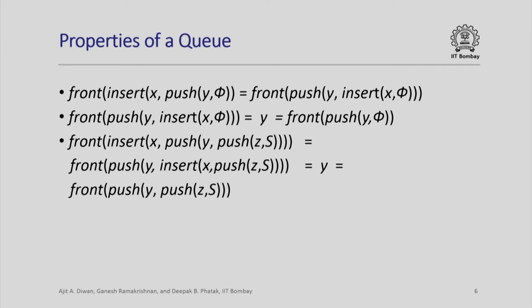Now consider a queue with two or more elements, written as push(y, push(z, s)) where s is any sequence with zero or more elements. If we insert x into such a queue, by definition the resulting queue is obtained by pushing y in the queue obtained by inserting x in push(z, s). The front of this is always y by definition, and this also equals the front of push(y, push(z, s)). So this equality holds for queues of size greater than or equal to 2. In this case we do not really need the induction hypothesis, but we can directly show the front remains the same.